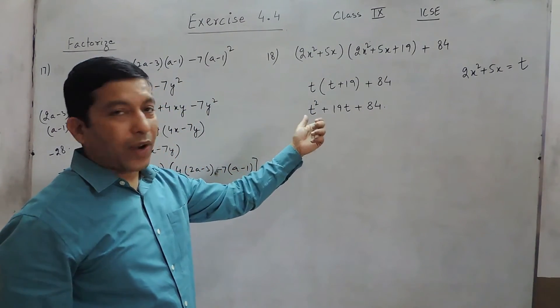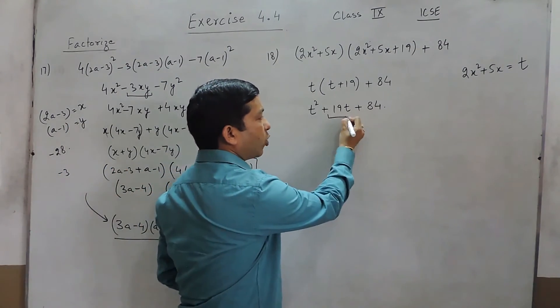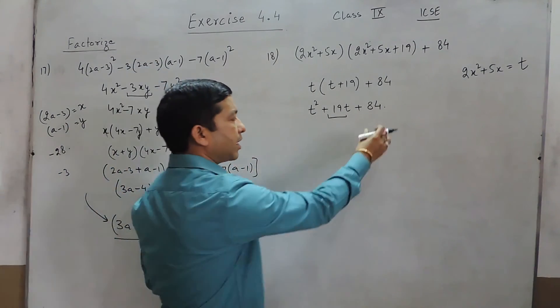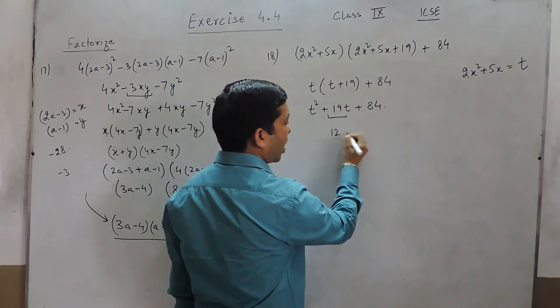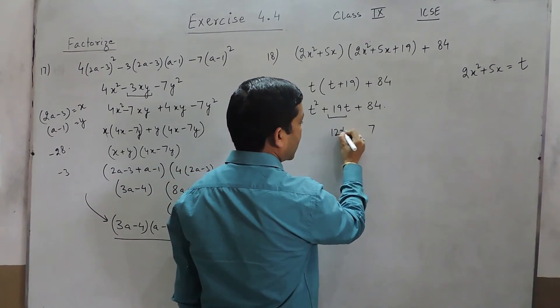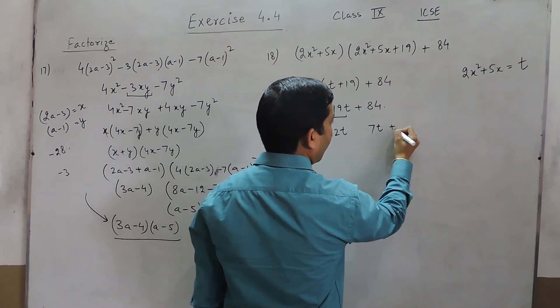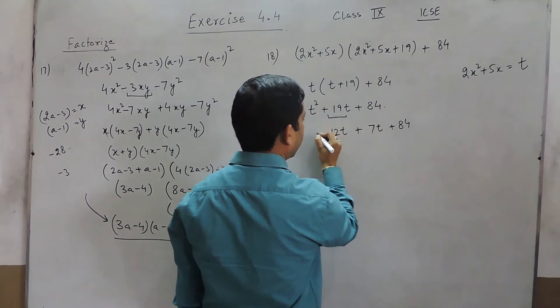We know that we have to factorize the middle term. The sum should be 19 and the multiplication should be 84. So these two terms are 12 and 7. So it is t² + 12t + 7t + 84.